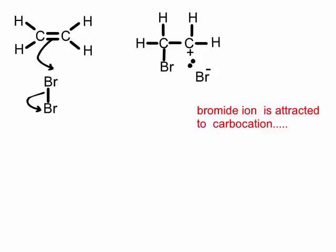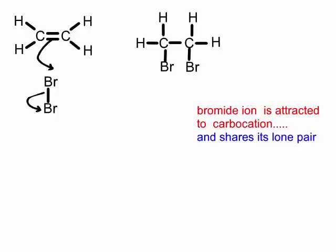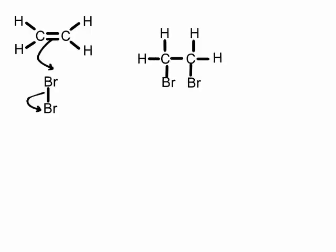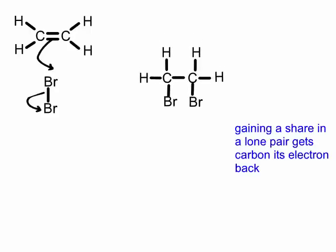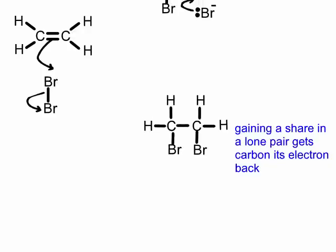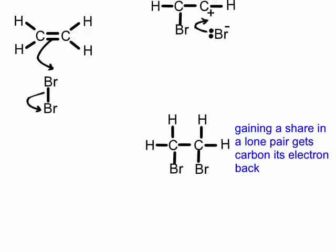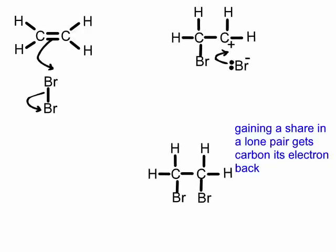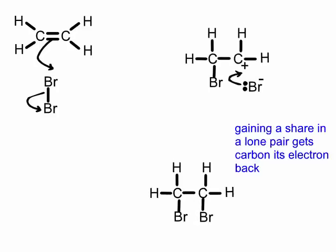The lone pair — the two electrons that had formed the Br-Br bond — is now used to form a bond between the bromide ion and the carbocation. The bromine is agreeing to share its pair of electrons. The positive charge on the carbon is gone because that carbon, in gaining a share in the lone pair on the bromine, is effectively up an electron and has lost its positive charge. Conversely, the bromine has lost its negative charge because, in agreeing to share that lone pair with the carbon, it is effectively down an electron and is therefore back to a neutral state.